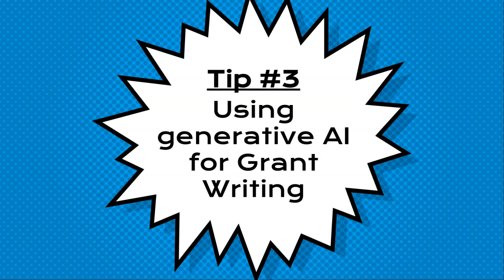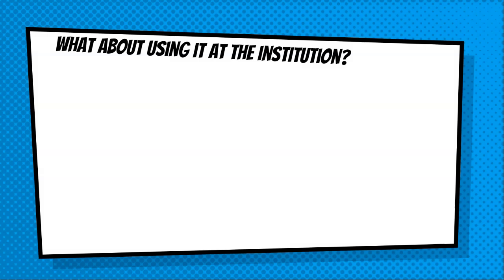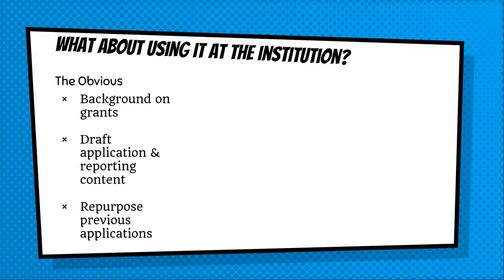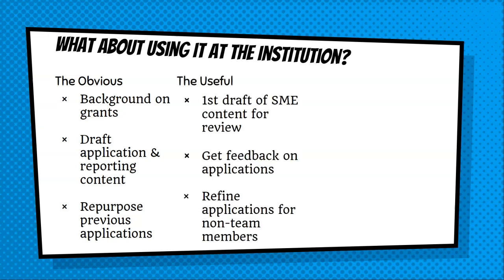What does it look like to use these tools with other folks on campus? Using AI can help with reconnaissance on grants and funders to determine if it's a relevant match. It can also draft application and reporting content and repurpose what you've already done. From there, you can use it to draft content for a subject matter expert to review and edit, starting from a moving position rather than a blank page.